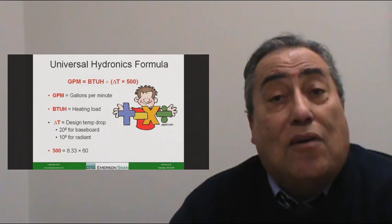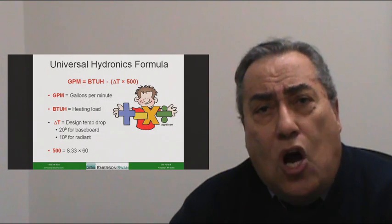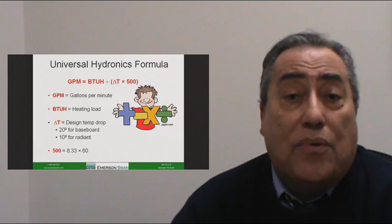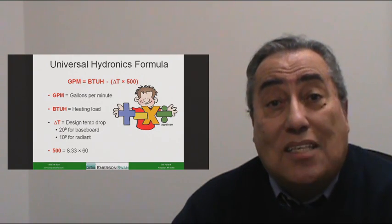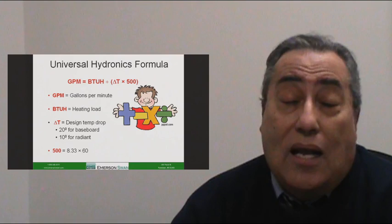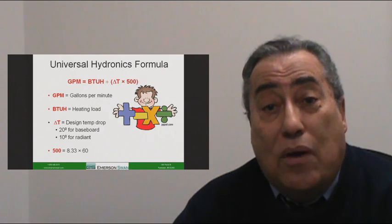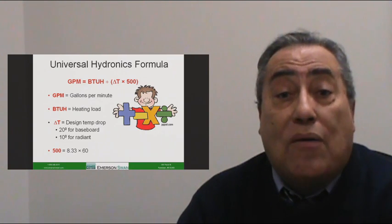Finally, the 500. The 500 is a constant that we use, and it represents 8.33—the weight of a gallon of water—times 60 minutes in the hour. The actual number is 499.8, but we can safely round up to 500.